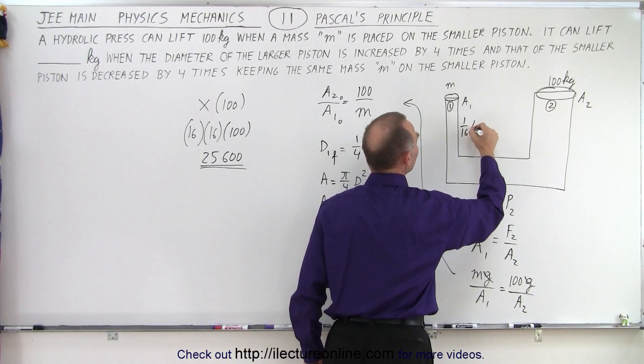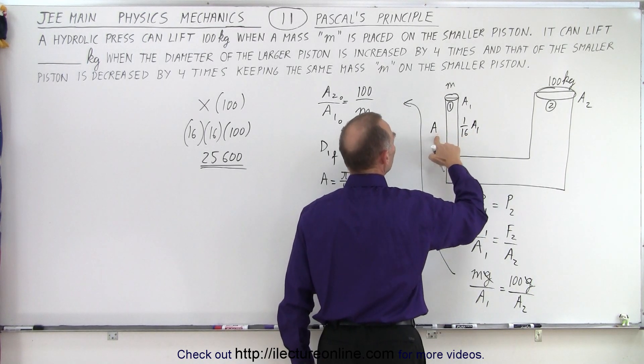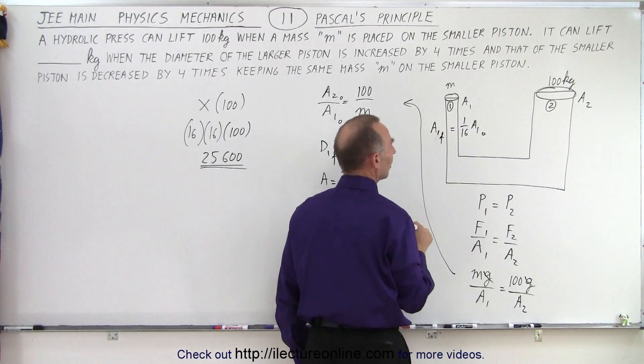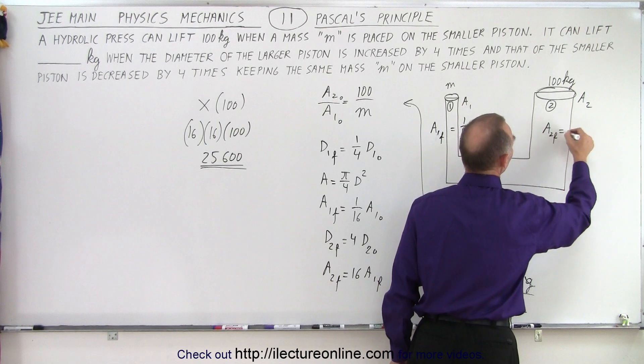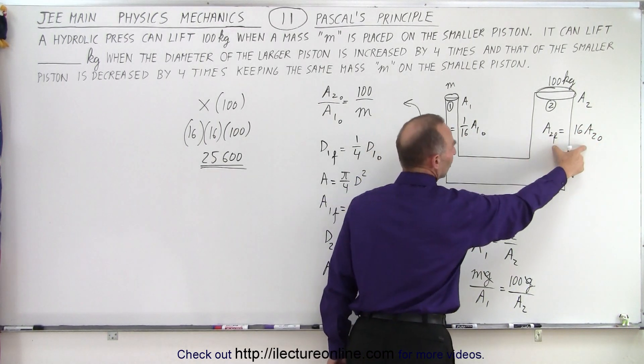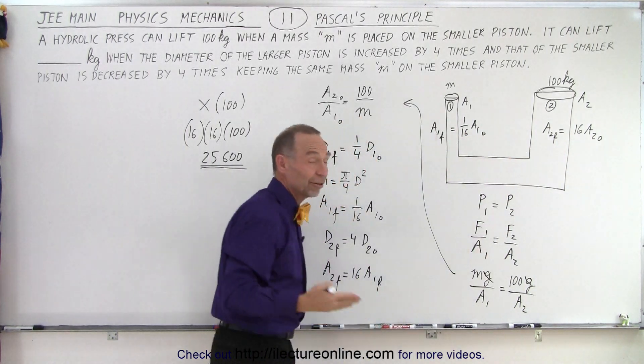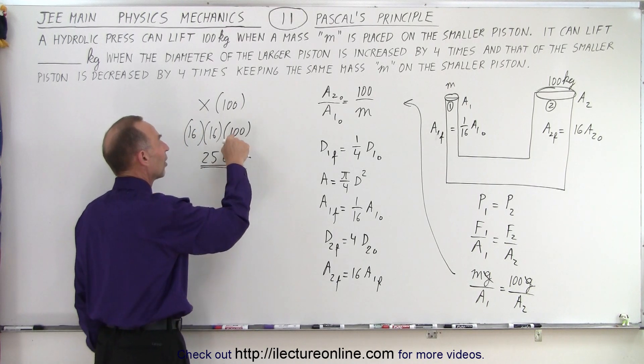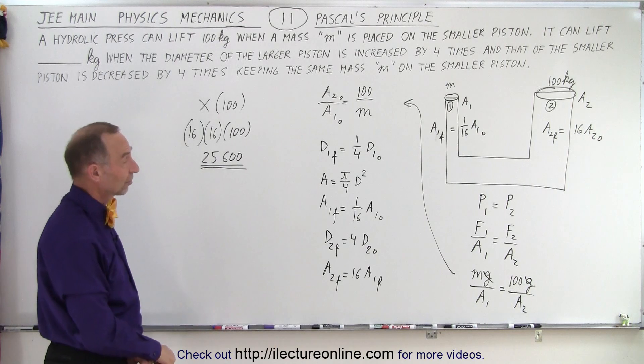So we can say that we have one sixteenth area 1, which is now the area 1 new, so the area 1 final equals the area 1 initial divided by 16, and here we can say that area 2 final is equal to 16 times area 2 initial. So, we increase the area by 16, decrease the area by 16, that's essentially a factor of 256, so it can lift 256 times the original mass of 100 kilograms, meaning 25,600.